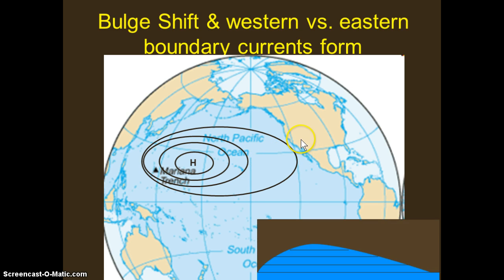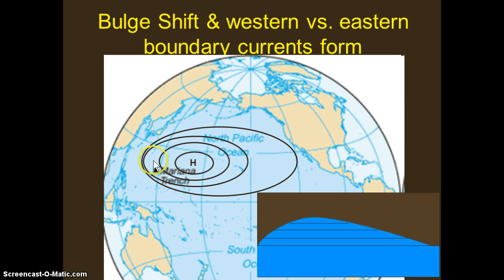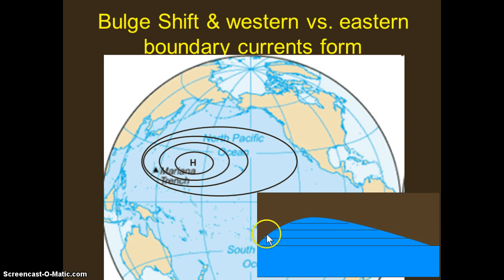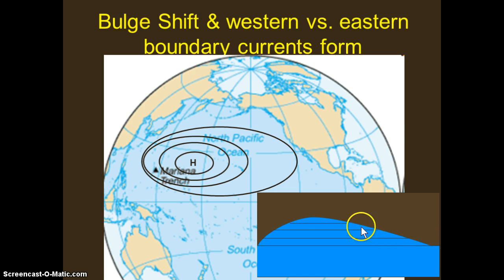When you have isobars that are closer together on one side, it means the actual currents are much, much stronger on the eastern boundary of a gyre than they are on the western boundary. If we take a cross-section and look at the sea surface level, here would be North America and here would be Southeast Asia. The sea surface actually piles up and bulges as we shift towards the eastern boundary — towards Southeast Asia and the Pacific. This happens in all gyres, and on the opposite side in the southern hemisphere.